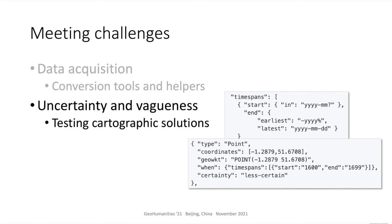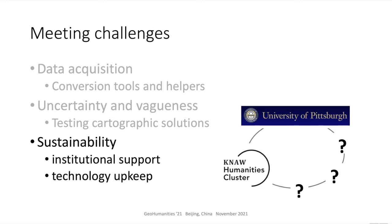The four-part structure of the Link Places 'when' element time span — with its earliest and latest ranges for both start and end — helps to represent uncertainty with respect to dates. Geometries can also be tagged as certain, less certain, or uncertain. However, cartographic representations for these remain a challenge and are currently an area of collaborative experimentation. Two challenges shared by virtually all DH infrastructure projects are ongoing institutional support and technological upkeep. Our collaborative partnership with the Dutch Humanities Cluster and several groups within the University of Pittsburgh are steps towards building an international supporting consortium.